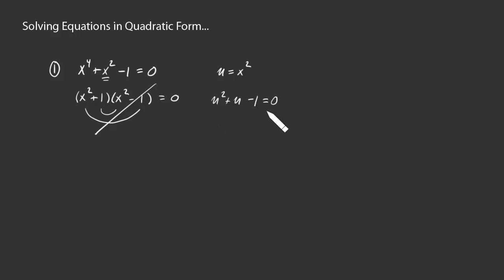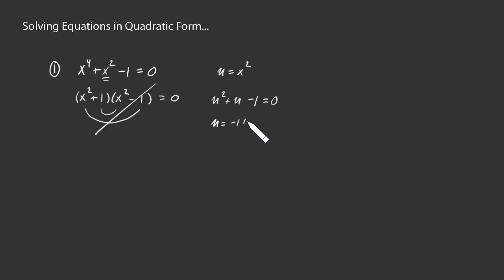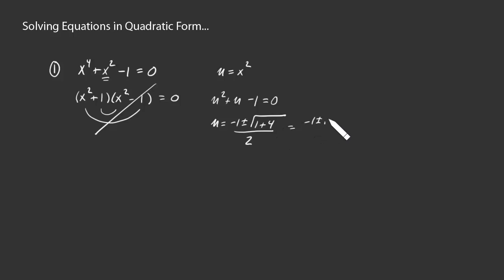Once we have this equation in terms of u, we can solve for u. It doesn't factor nicely, so we use the quadratic formula. u equals negative b, which is negative 1, plus or minus the square root of b squared minus 4ac — where c is negative so that becomes plus 4 — all over 2a. That gives us u equals negative 1 plus or minus the square root of 5, all over 2, which is fully simplified.